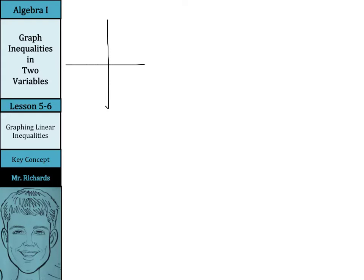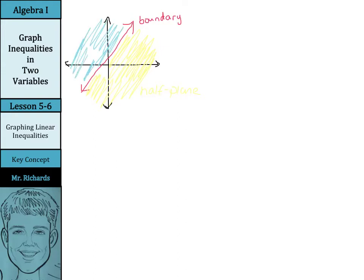Let's start off with a nice x-y axis here, and we might as well draw in a line. What that line is going to be is called a boundary when we're dealing with linear inequalities. That boundary breaks up our plane — we have a half of the plane down here, and that's actually a half plane. And we have half of a plane up here, and that too is called a half plane.